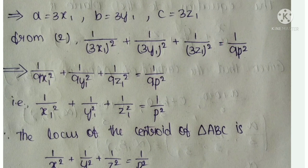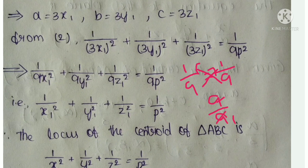Simplifying: 1/9x₁² + 1/9y₁² + 1/9z₁² = 1/9p². Factoring out 1/9 from the left side and multiplying both sides by 9: 1/x₁² + 1/y₁² + 1/z₁² = 1/p².